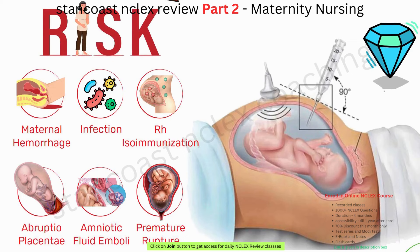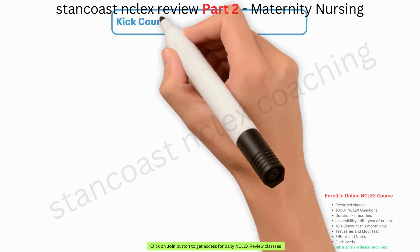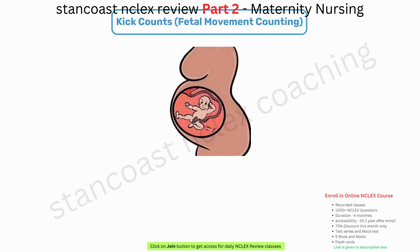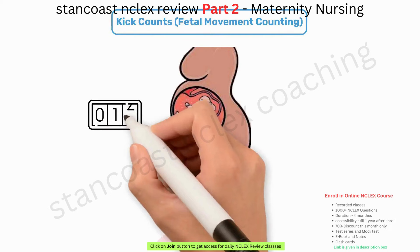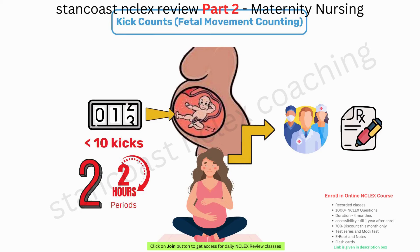Prior to amniocentesis, clients provide informed consent, bladder status is considered, ultrasonography aids in locating the placenta, and continuous monitoring of vital signs and fetal heart rate is implemented. Kick counts (fetal movement counting) are a simple yet crucial practice. Clients are instructed to sit quietly or lie down on their side to count fetal kicks, and should promptly inform the healthcare provider if there are fewer than 10 kicks in two consecutive two-hour periods, as this could indicate potential issues warranting further evaluation.